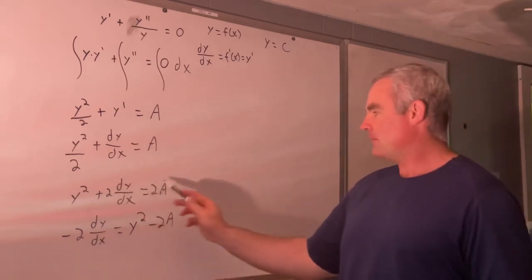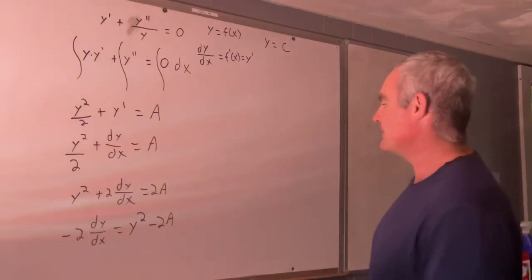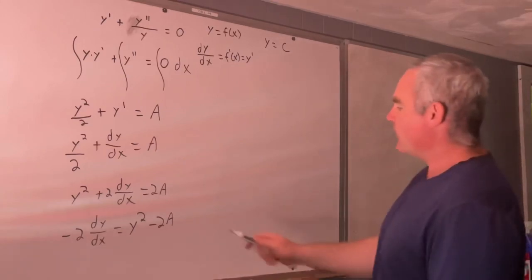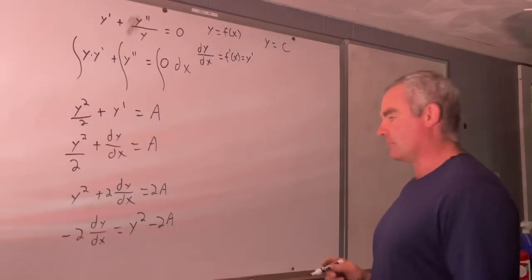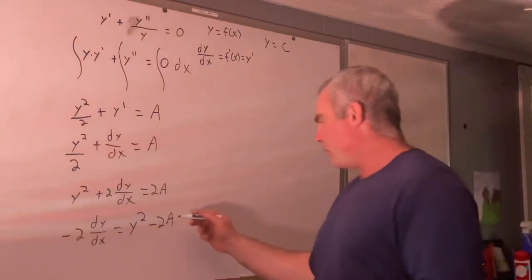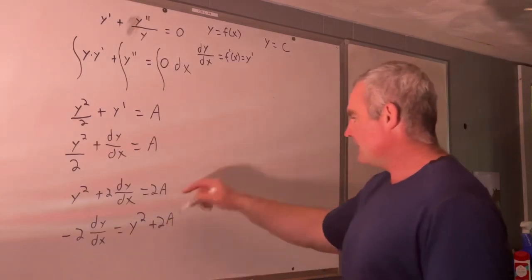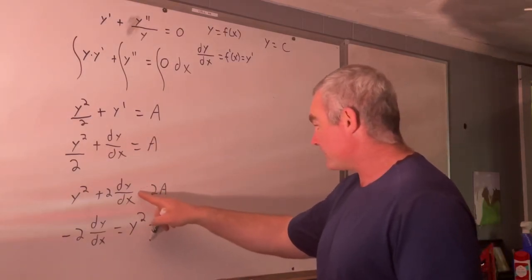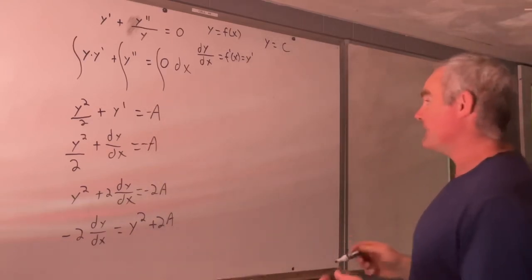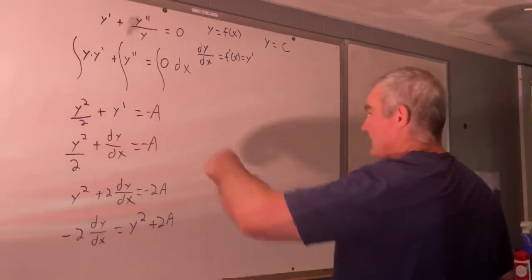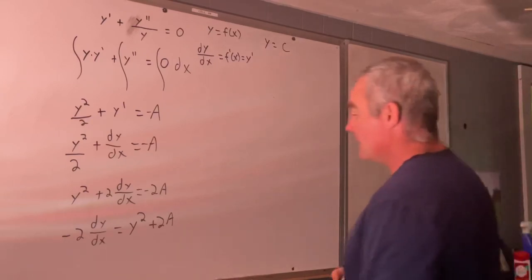Quick recap. From here, all I did, I subtracted y squared and multiplied both sides by negative one. Well, negative two times an arbitrary constant is still just an arbitrary constant, right? So let's just say this is plus two a. And I'll kind of go backwards a little bit here and just put a negative there and a negative there and a negative there. And that's totally valid. I mean, a is an arbitrary constant. So negative a works just as well as an arbitrary constant.